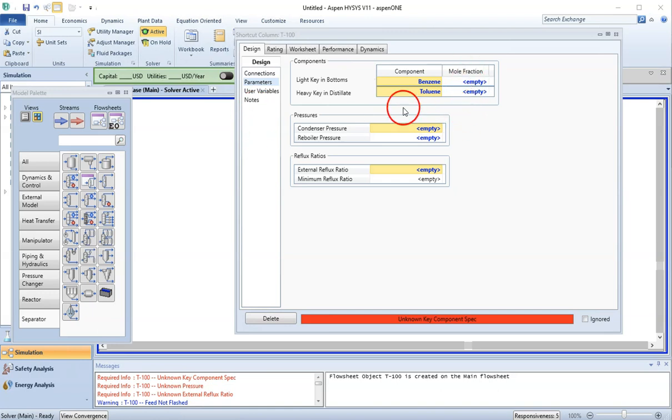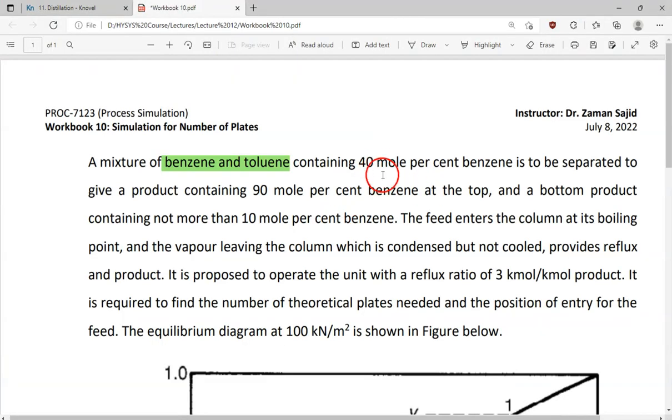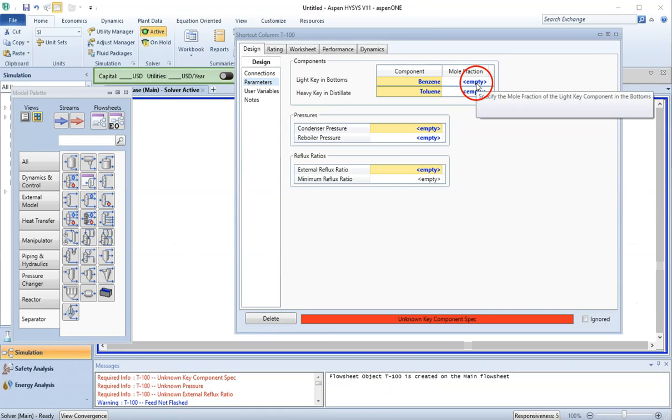Now we need to provide their mole fractions. Let's go here and look at the statement. This is my feed composition, to give a product containing 90 mole percent of benzene at the top. This means my composition of the other component, which is toluene, will be 10 mole percent. The next statement says a bottom containing not more than 10 mole percent of benzene. I will go back to HYSYS. My mole fraction of the light key in the bottom is 0.10, and heavy key in the distillate is 0.10 again.